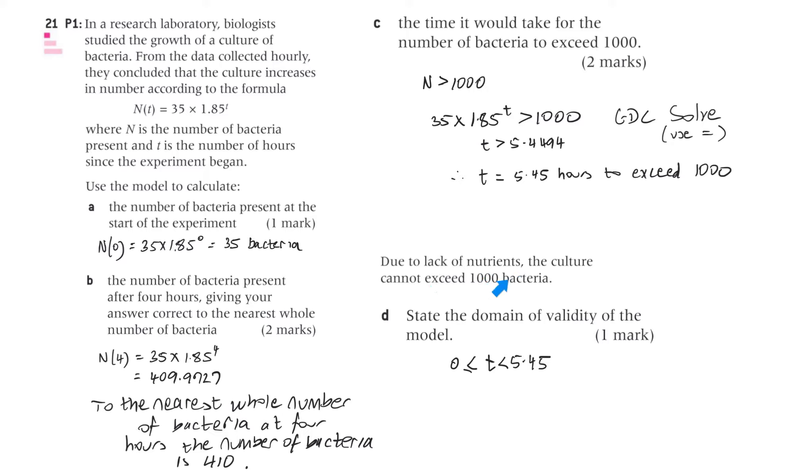Next one. Due to the lack of nutrients, the culture cannot exceed 1,000 bacteria. State the domain of validity of the model. And so that would be like this. And we know it's greater than or equal to zero, but it's less than 5.45, as we established up here, because at 5.45 hours it exceeds 1,000, and it says that it cannot exceed 1,000. So we end up with that.